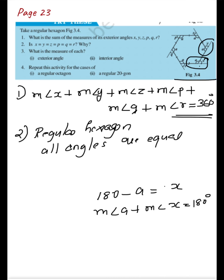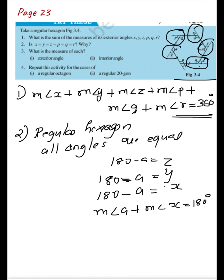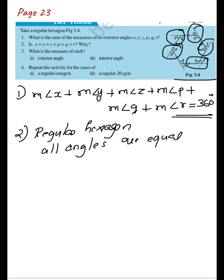Similarly, to get y, z, p, q, and r, you subtract a from 180 degrees in each case. So all exterior angles are equal: x = y = z = p = q = r, since all interior angles are equal and each pair forms a linear pair summing to 180 degrees.